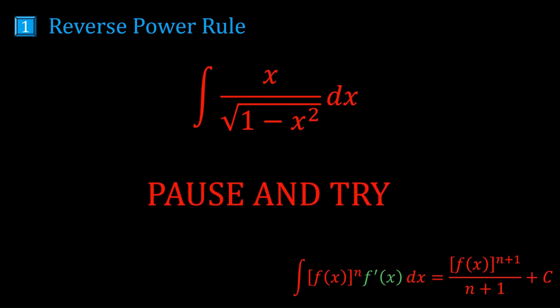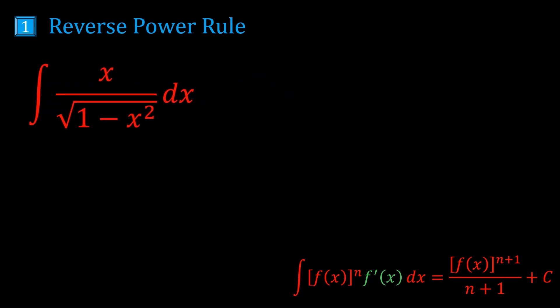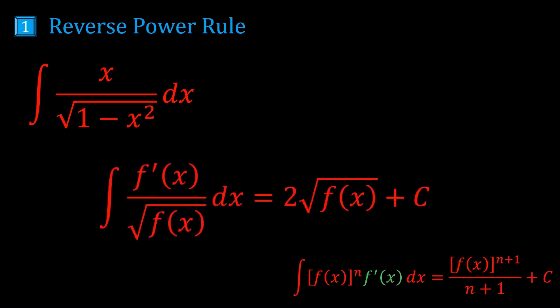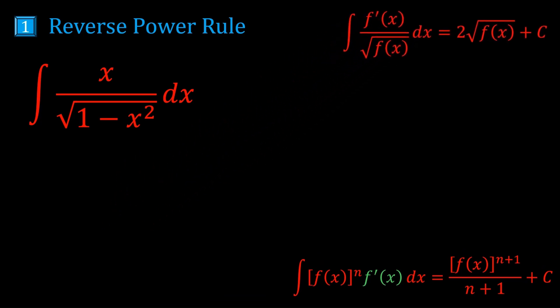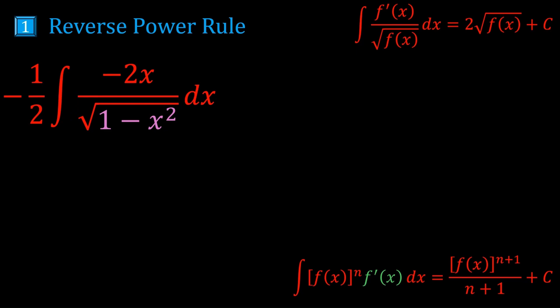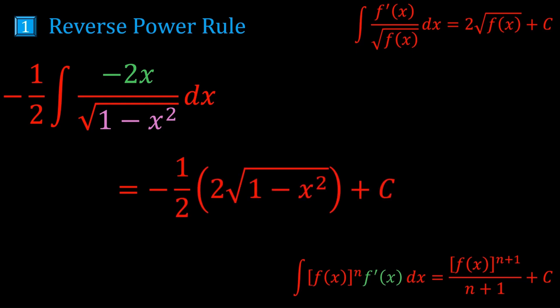Here's another one to try. We can write 1 over √(1−x²) as (1−x²) to the minus half power. Or use the quicker way: we should know that the integral of 1 over √x is 2√x. We notice that 1−x² is inside the square root, and its derivative is minus 2x. We almost have minus 2x at the top, so we multiply and divide by minus 2. The answer is minus ½ times 2√(1−x²), which simplifies to minus √(1−x²).